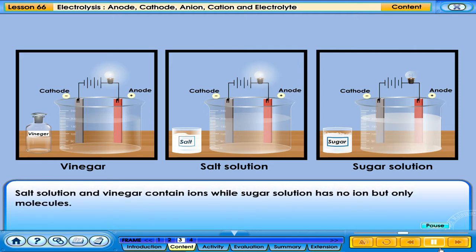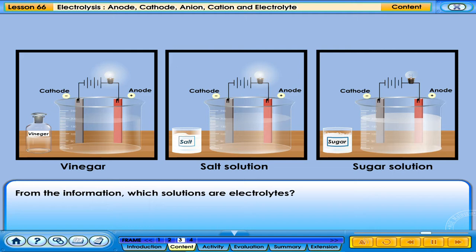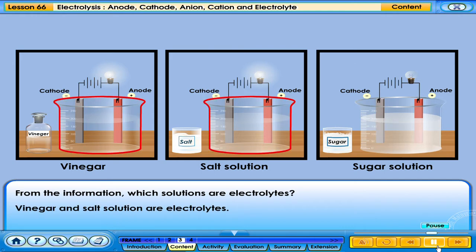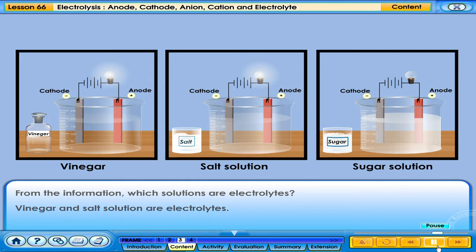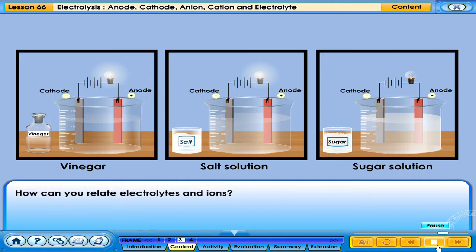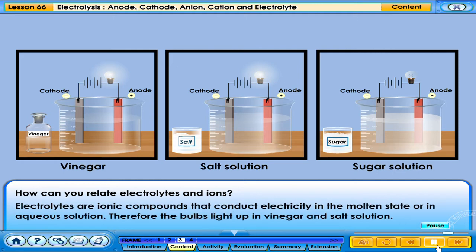Salt solution and vinegar contain ions, while sugar solution has no ions — only molecules. Which solutions are electrolytes? Vinegar and salt solution are electrolytes. Electrolytes are ionic compounds that conduct electricity in the molten state or in aqueous solution. Therefore, the bulb lights up in vinegar and salt solution.